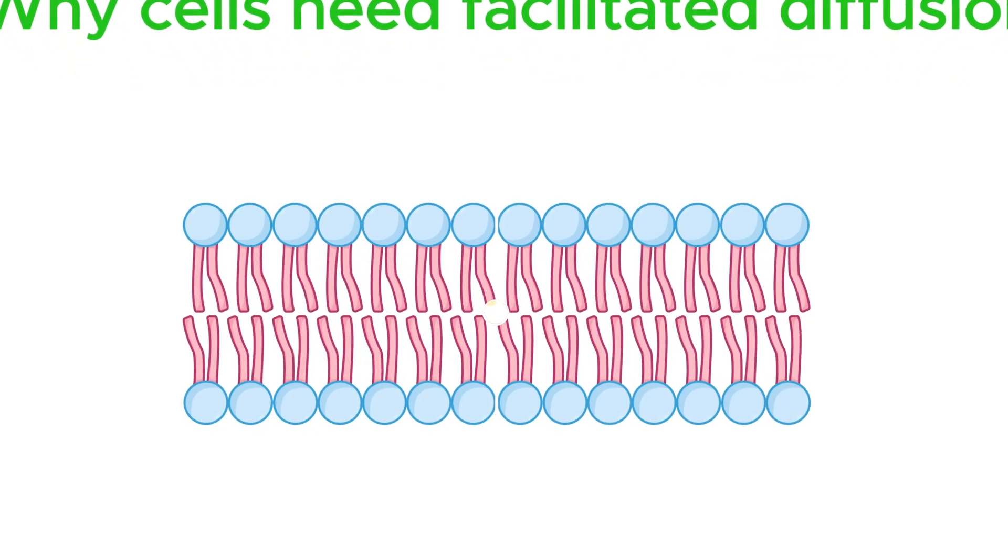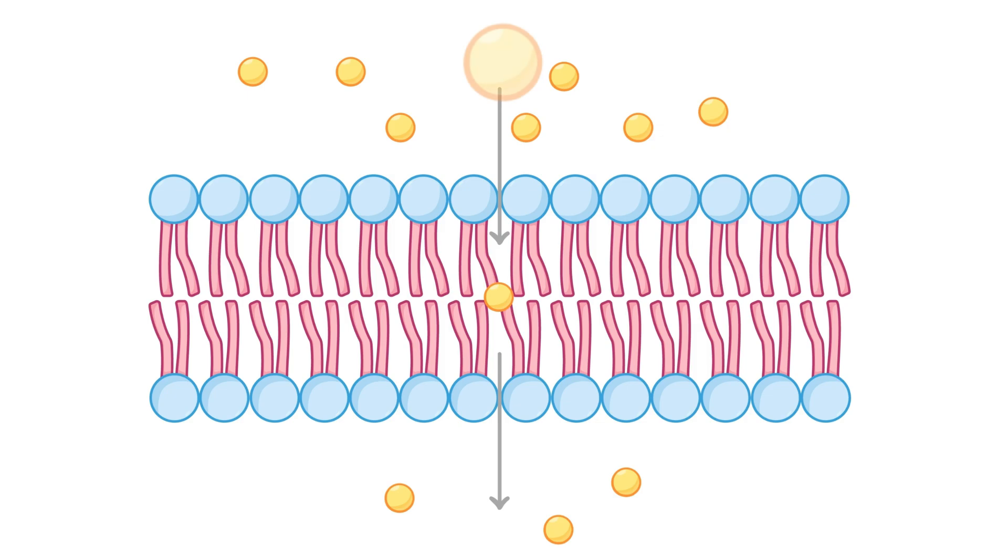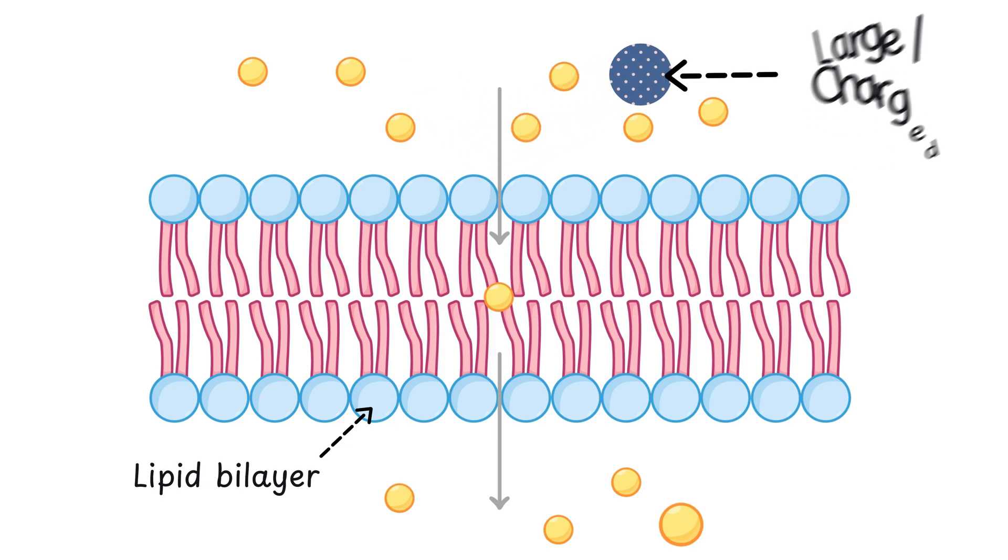Let's first discuss why cells need this special mode of transportation. In simple diffusion, small molecules like water can easily pass through the lipid bilayer of the cell membrane. But sometimes, the molecules the cell needs are either too large or charged, and they can't pass through on their own.